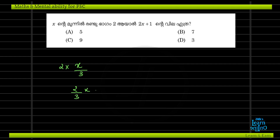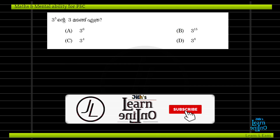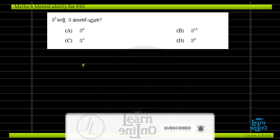If x is equal to 2 by 3, then x is equal to 2. This means we need 2x plus 1 to be equal to 3, and multiply by 2. This means we need 2x to be equal to 2x plus 1. If 2x is equal to 6, then x is equal to 2x plus 1. So, what is 3 raise to 5?